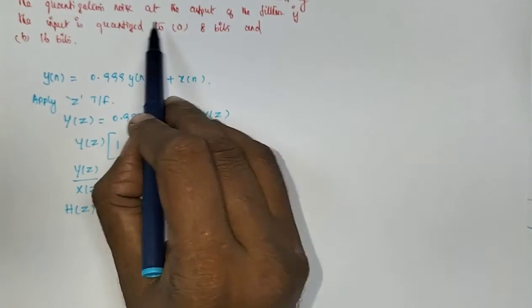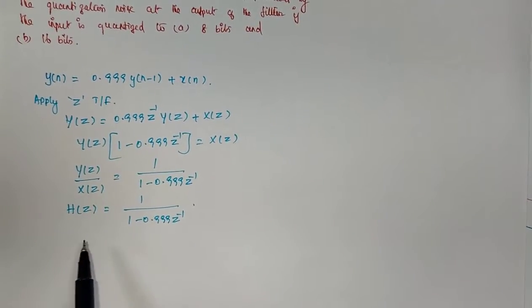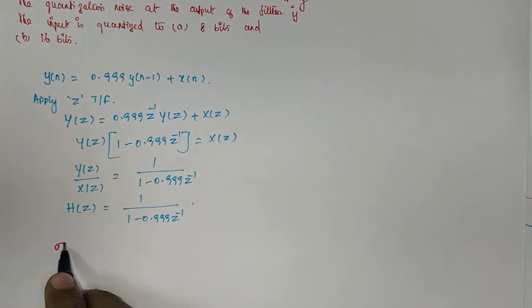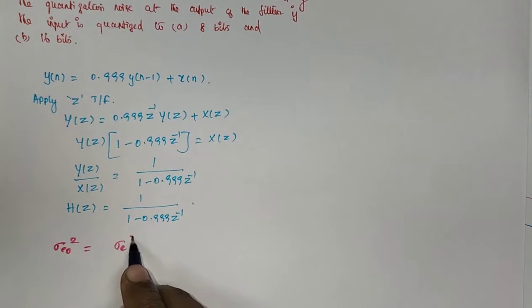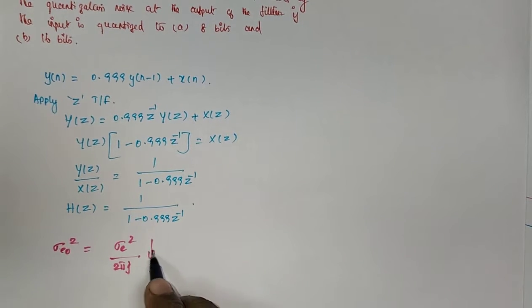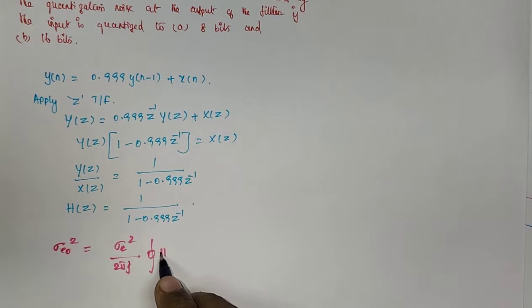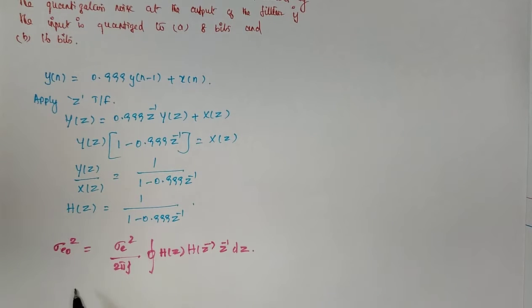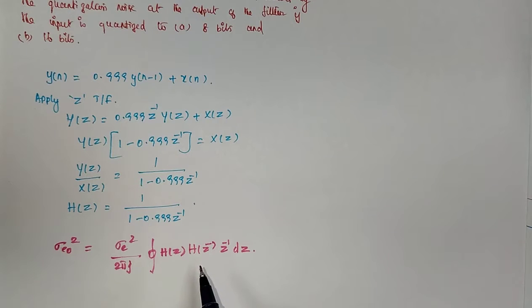To find the quantization noise at the output of the system, the relation is: σ²eo = σ²e · (1/2πj) · ∮ H(z)·H(z⁻¹)·z⁻¹ dz, where the integral is a closed contour integral. This is the relation to find the output quantization noise of the filter.